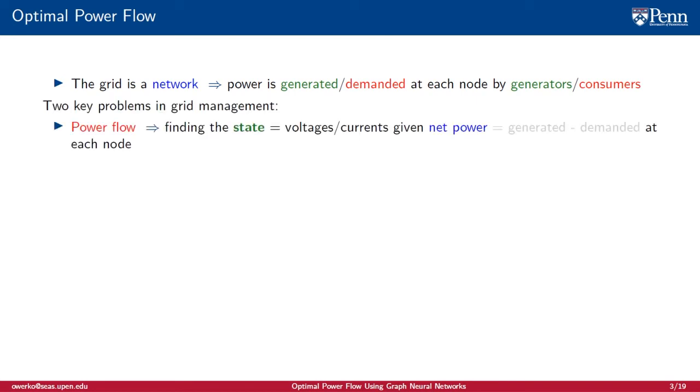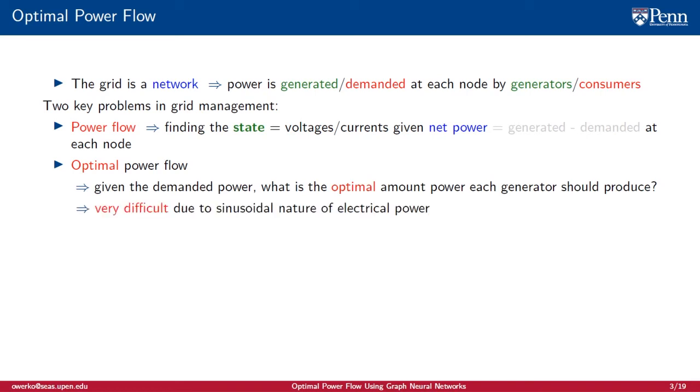There are two key problems in grid management. Power flow is finding a network state, given the power generated and demanded at each node. This is relatively simple to do. Optimal power flow is much harder. Given the demand at each node, we want to answer the question, how much power should each generator produce? It's very difficult due to the sinusoidal nature of electrical power. And unfortunately, approximations fall short in one way or another.